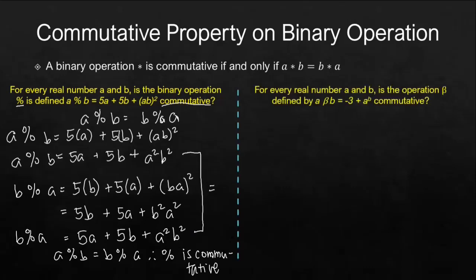Next example. We have a different operation here, beta. A beta b equals negative 3 plus a raised to the power of b. We have to think if this is commutative. So you may pause this video and use the first example as reference on how we will prove this second example. After 10 seconds, we will resume to check your answer.